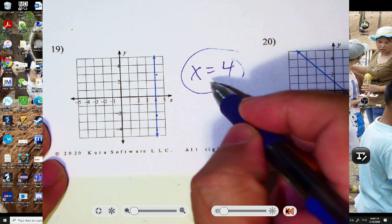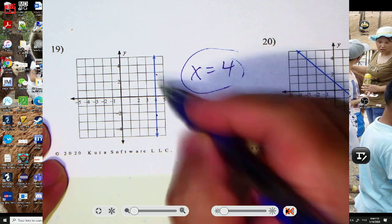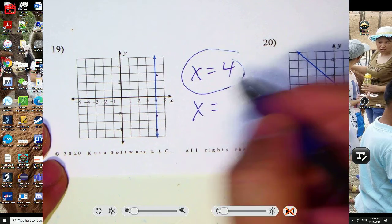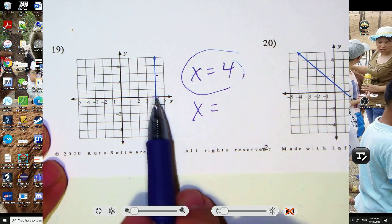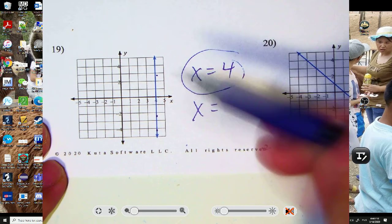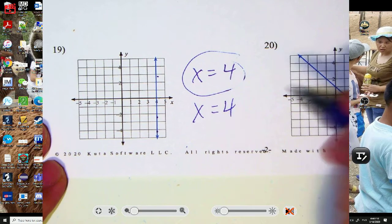So that's the equation of the line. This is what the equation of a vertical line looks like, x equals 4. So the equation of a vertical line looks like x equals whatever the x value is. So again, number 19, the equation is x equals 4.